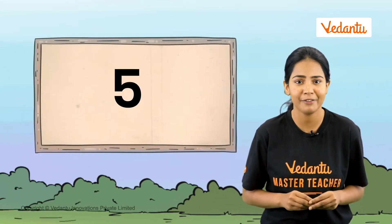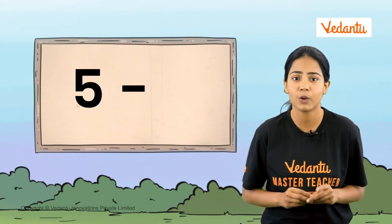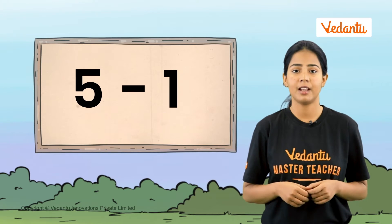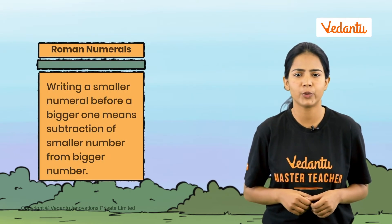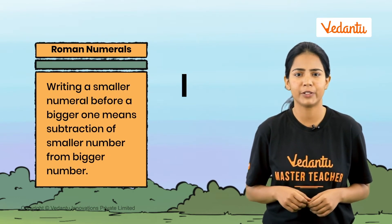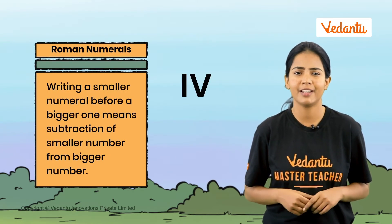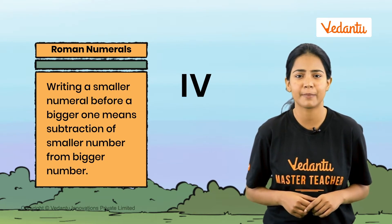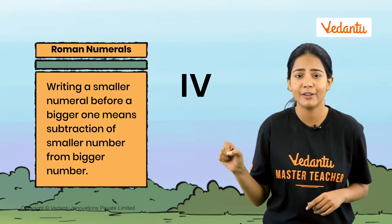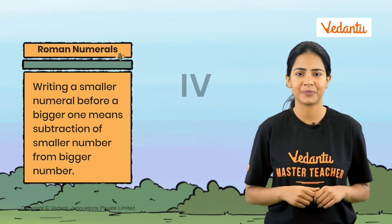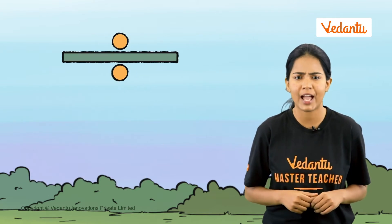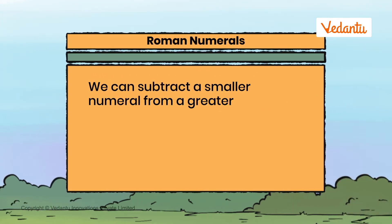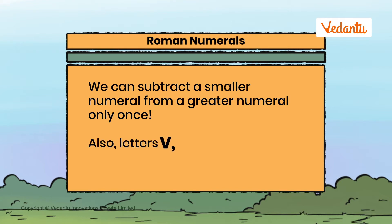So how do we represent four? We write the letter for five and subtract one from it. If we write a smaller numeral I before a greater numeral V, it means we are subtracting I from V. A smaller numeral can be subtracted from a greater numeral only once. Also, the letters V, L, and D can never be subtracted from any greater numeral.